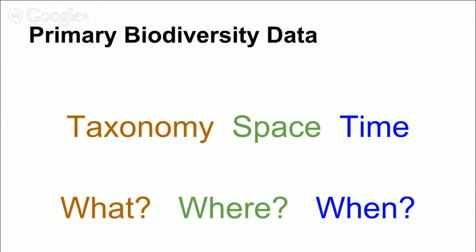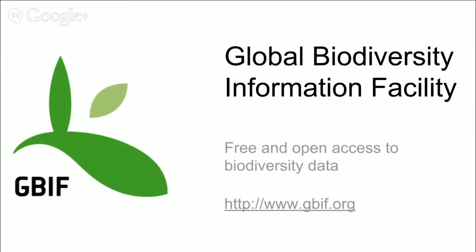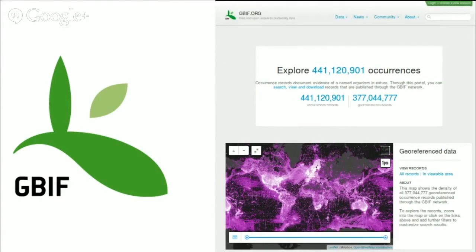I will focus on primary data, especially large aggregated sets of primary data. Thanks to initiatives such as the Global Biodiversity Information Facility (GBIF), we can access an incredible amount of biodiversity information. GBIF has built a network of data publishers — institutions that publicly share their biodiversity data collections — and a centralized data portal allowing anyone to explore the content of the whole network from a single entry point. As of yesterday, there are more than 441 million primary records available through the GBIF network.